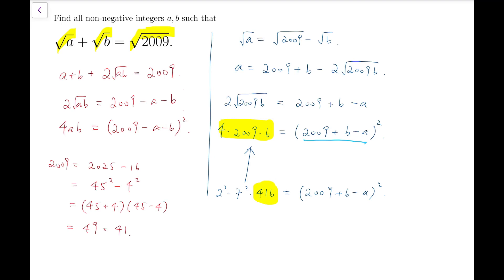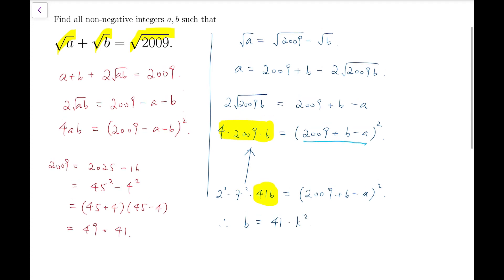So I can say that because 41 is a prime number, therefore b has to be equal to 41 times some perfect square, and I can set some non-negative integer k, so b equals 41k².